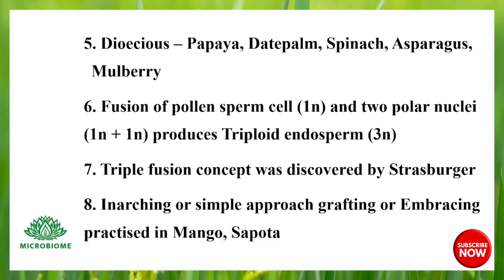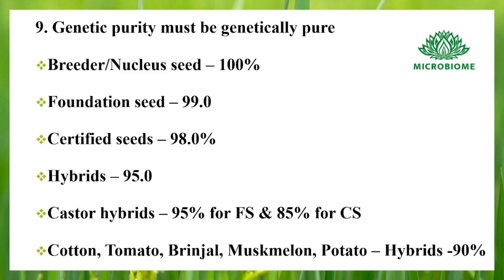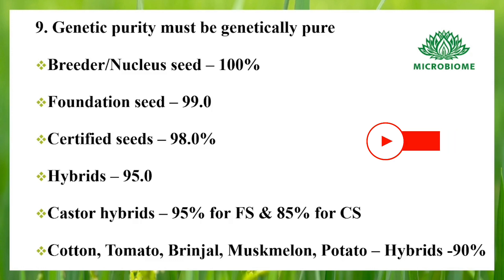Inarching or approach grafting is practiced in mango and sapota. Next, genetic purity: seeds must be genetically pure. Breeder or nuclear seed has 100% purity, foundation seed 99%, certified seed 98%, hybrids 95%, and castor hybrids have 95% for foundation seeds and 85% for certified seeds.